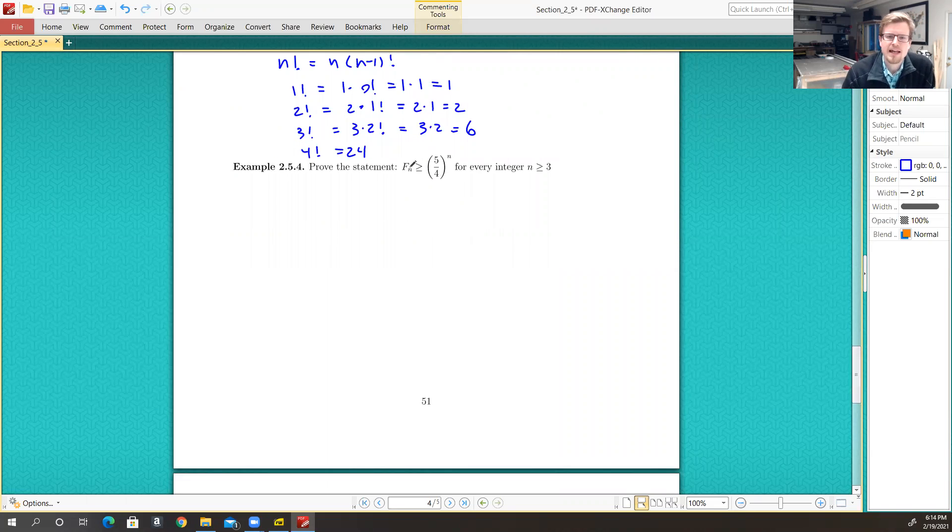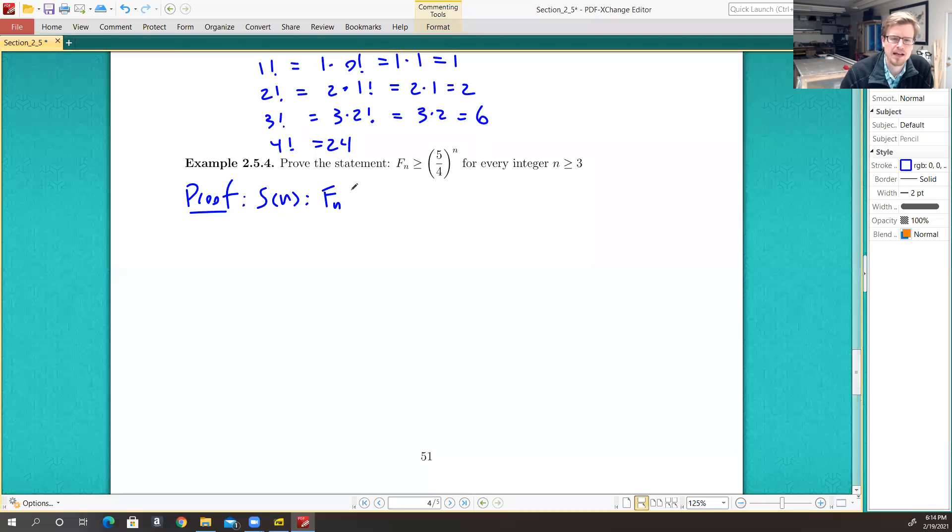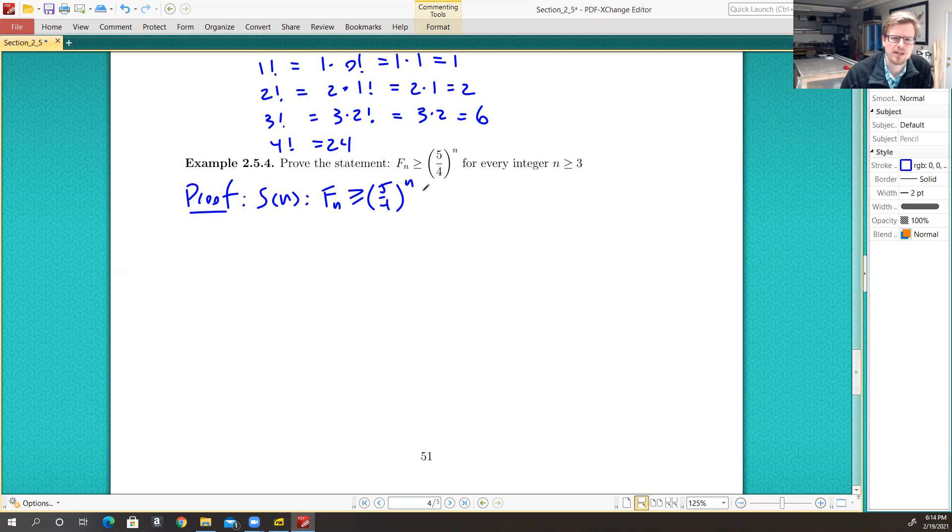So let's prove the statement that F sub n, the nth Fibonacci number, is greater than or equal to 5 quarters to the nth power, for every integer n greater than or equal to 3. We want to identify what our statement is, and our statement is exactly as it says: the nth Fibonacci number is greater than or equal to 5 quarters to the nth power. And the base case here would be where n is equal to 3.